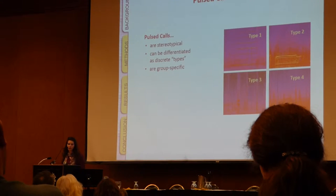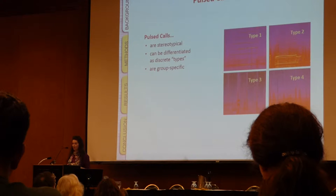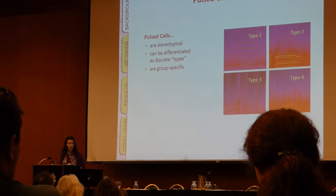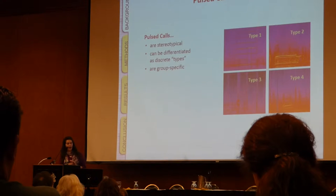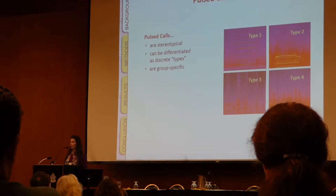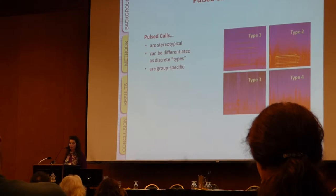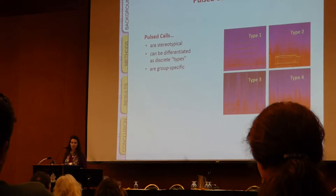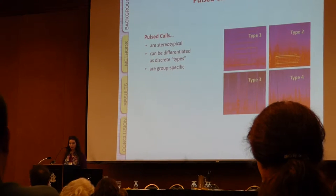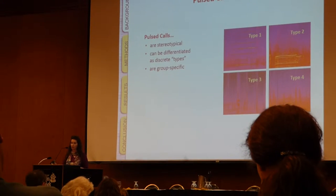Pulse calls are stereotypical — they are produced in the same manner from individual to individual over time. These stereotyped calls can be differentiated as discrete types. I have four different calls on the screen, and you can see just by looking at the spectrograms that they look very different, and in fact they represent different types. Pulse call types are group-specific, meaning a certain call type may be used by only a handful of groups, and all members of a given group are going to produce the same collection of call types.